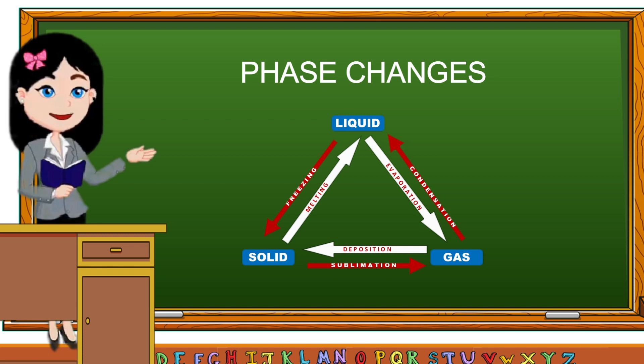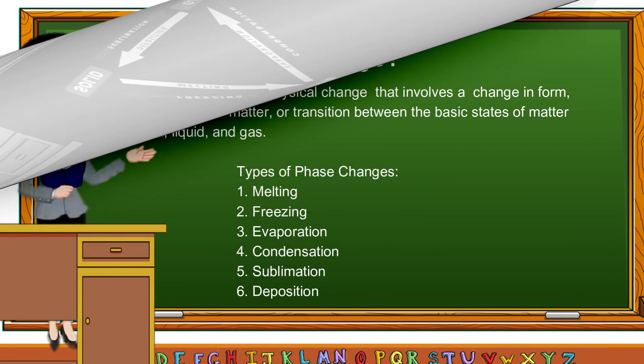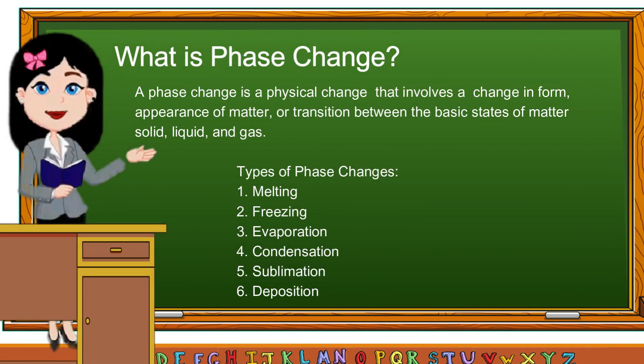What is phase change? A phase change is a physical change that involves a change in form, appearance of matter, or transition between the basic states of matter: solid, liquid, and gas.